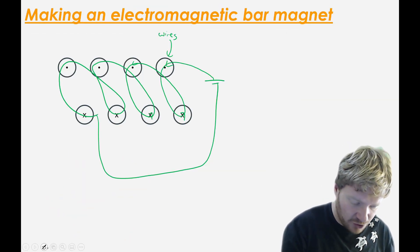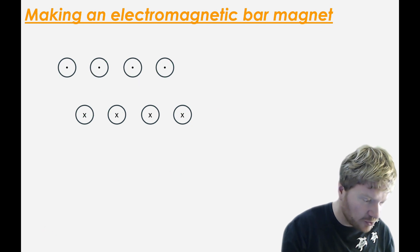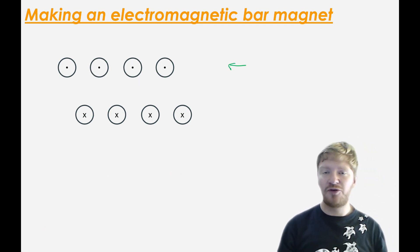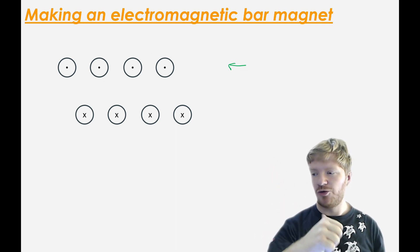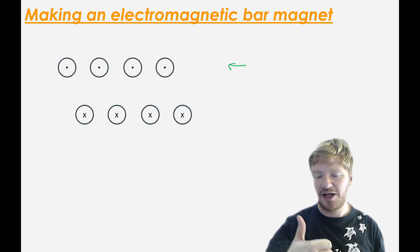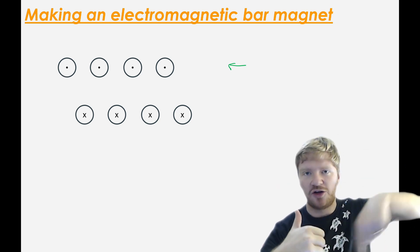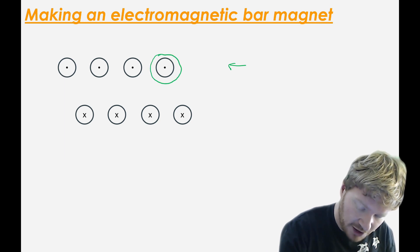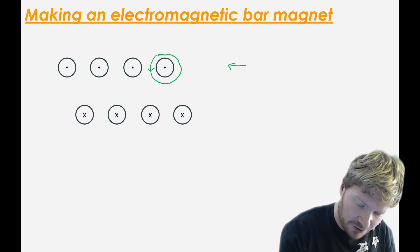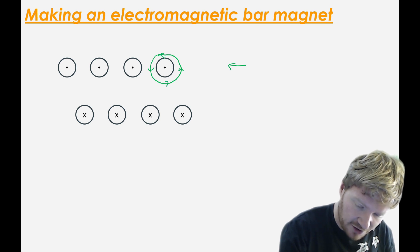So what will that do to the magnetic fields? Well, on the top row here, it's coming out of the page. So right hand grip rule. You want your thumb pointing towards you or pointing out of the page and you can see your fingers curl around that way. Always remember to use your right hand rule. Cool. So each of these will have a magnetic field that looks like that.